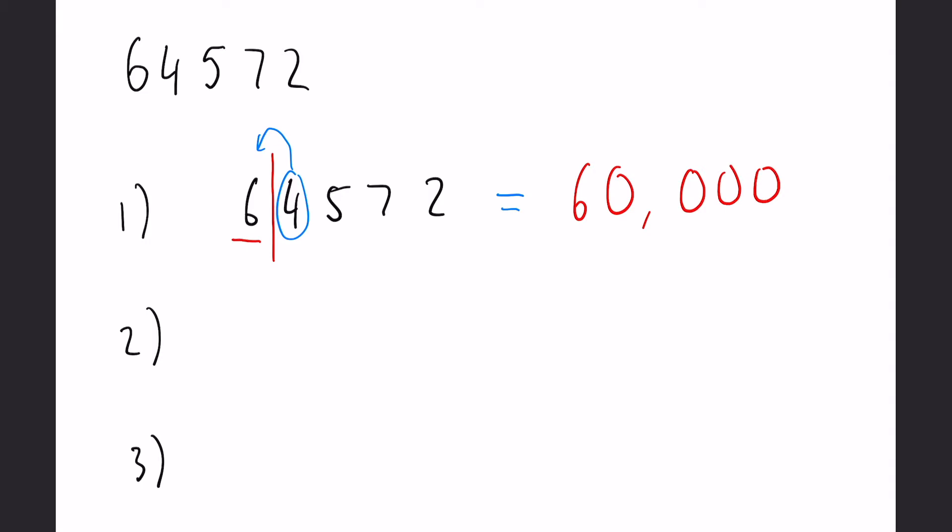Okay, let's look at the second one. Write the number down again, we want to go across two significant figures, draw that line in, and you can see we have a five this time. That means that the number before does go up and again this is going to become 65,000.